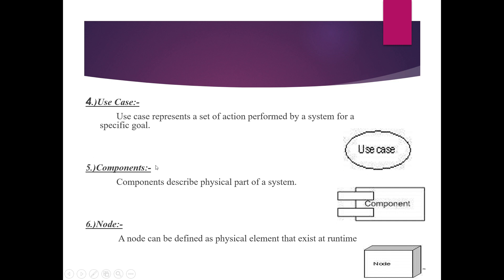Components describe the physical part of a system. If you design any software system, there are physical parts of that computer software system — those are components. Components are represented graphically with a specific type of diagram in UML when we design the blueprint. UML is the language we use for this purpose.